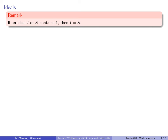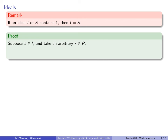A basic remark: if an ideal I contains the multiplicative identity 1, then I is the entire ring R. This holds for left ideals, right ideals, or two-sided ideals. To prove this, suppose 1 is in our ideal and take an arbitrary element little r in our ring. By definition, r times 1 is in the ideal because 1 is in the ideal, and therefore r is in the ideal. Since r is arbitrary, the ideal has to be all of R.